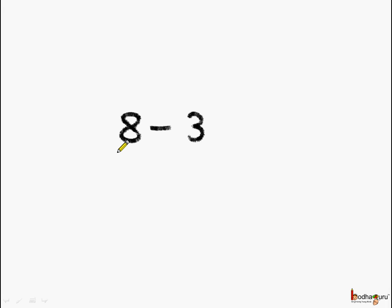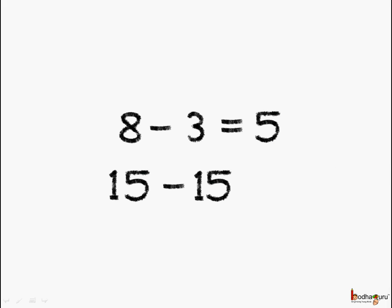What is 8 minus 3? It is equal to 5. And 5 is a whole number. Now what is 15 minus 15? It is equal to 0. 0 is also a whole number.